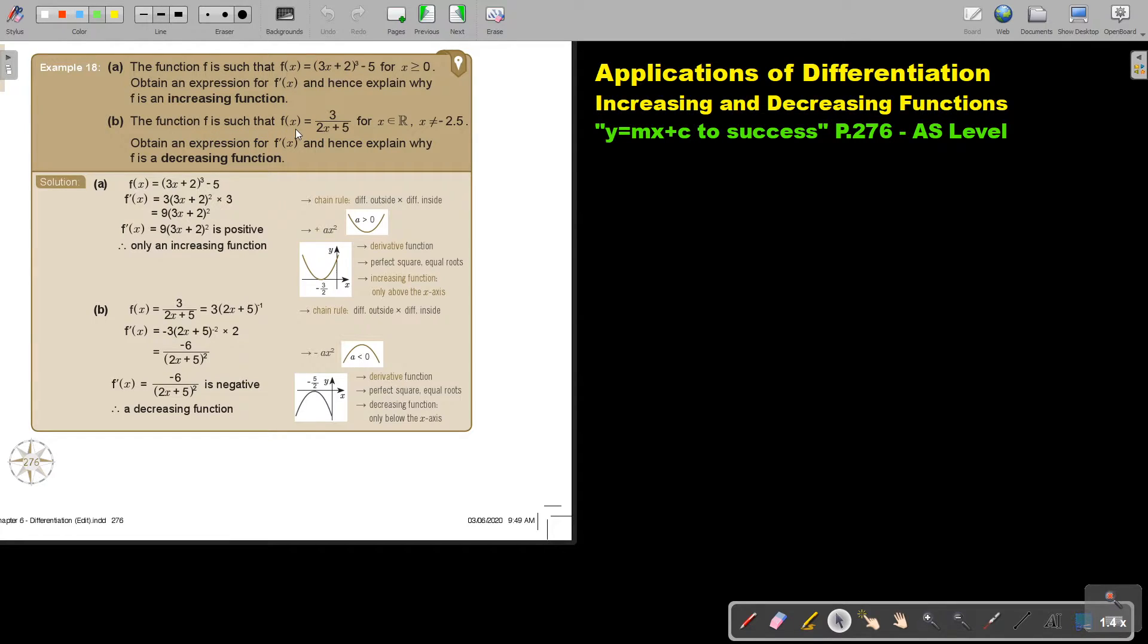So now they give you another function where 3 divided 2x plus 5 and x cannot be negative 2.5. It's always good to understand that statement because as soon as it's negative 2.5 this will become negative 5 plus 5 which will end up at 0 and division by 0 is undefined. So obtain an expression again differentiate and hence explain why it's a decreasing function.